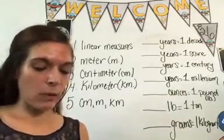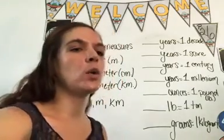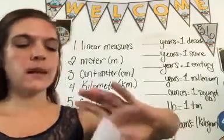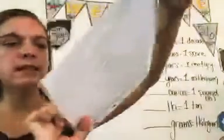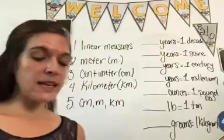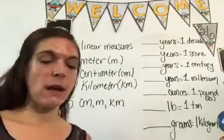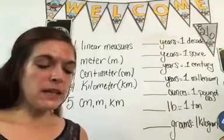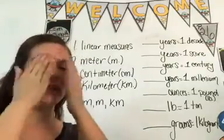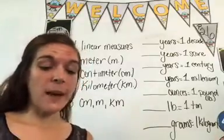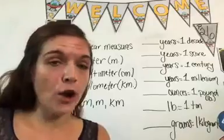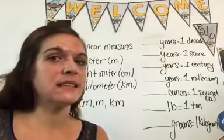So we have linear measures — you guys already know those and they're also on your conversion sheet. English linear measures are the ones up here, and the metric ones are down here. So let's review: how many inches are in a foot? Twelve. How many inches are in a yard? Thirty-six. How many feet are in a yard? Three. How many feet are in a mile? Five thousand two hundred eighty. How many yards are in a mile? One thousand seven hundred sixty.